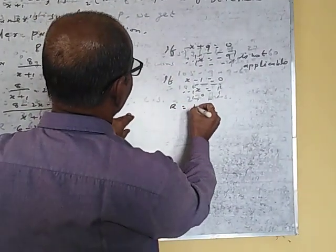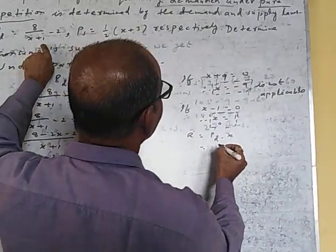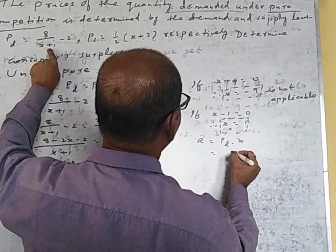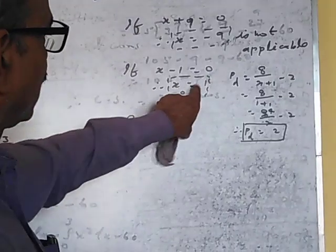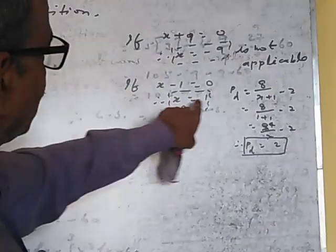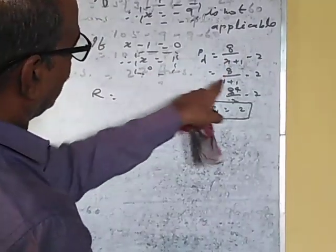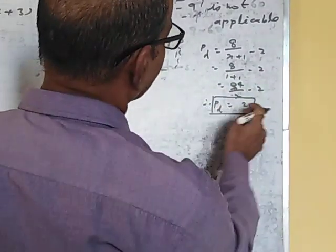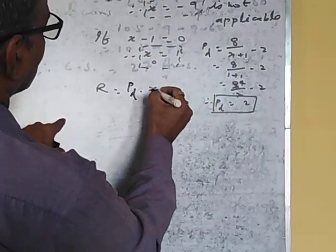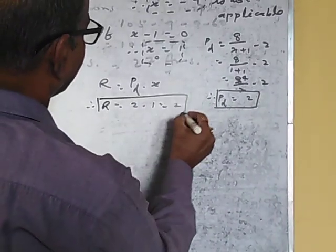So we know R equals PD into x. With x equal to 1, putting in PD: PD equals √(8 into 1 plus 1) minus 2, that is √2 equals 4 minus 2, so PD equals 2. And R equals PD into x, that is 2 into 1, so R equals 2.